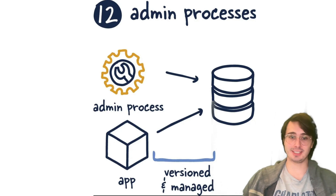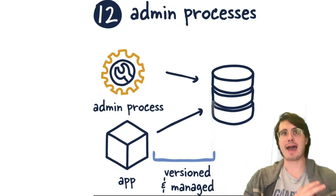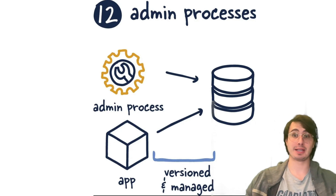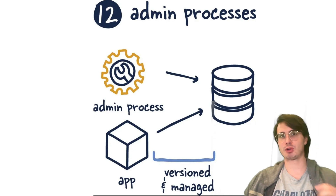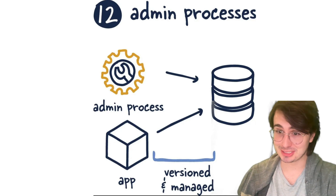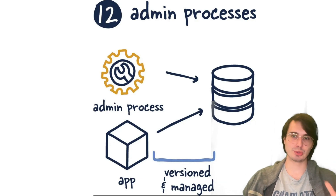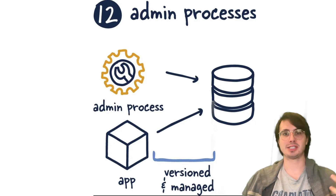The 12th factor is admin processes. Admin processes like database migrations or one-time scripts should run in an identical environment to regular application processes, using the same codebase and configuration. If you're running a database migration in a non-identical environment, you won't get the same results as running it in the actual target environment. So it's really critical to make sure those admin processes are run in an identical, versioned, and managed environment just like the core application.